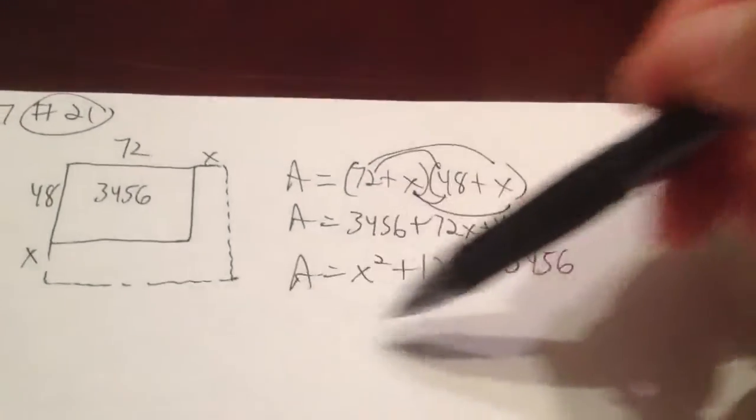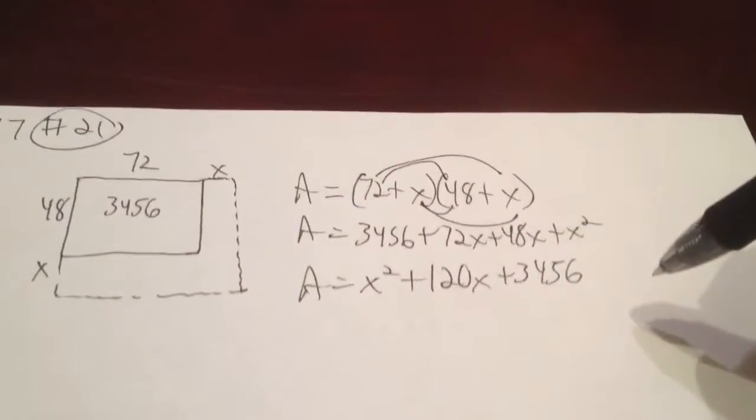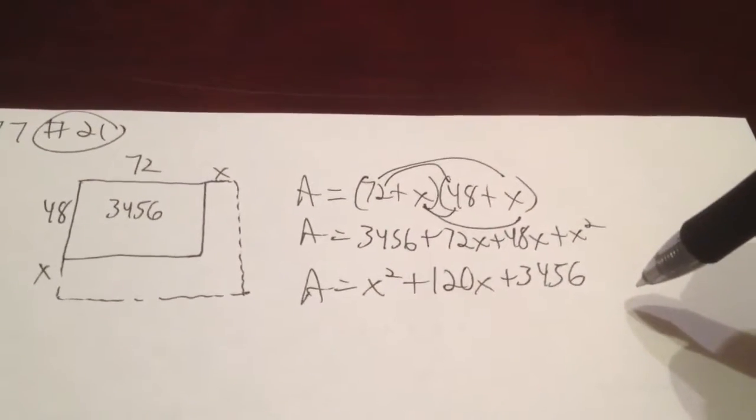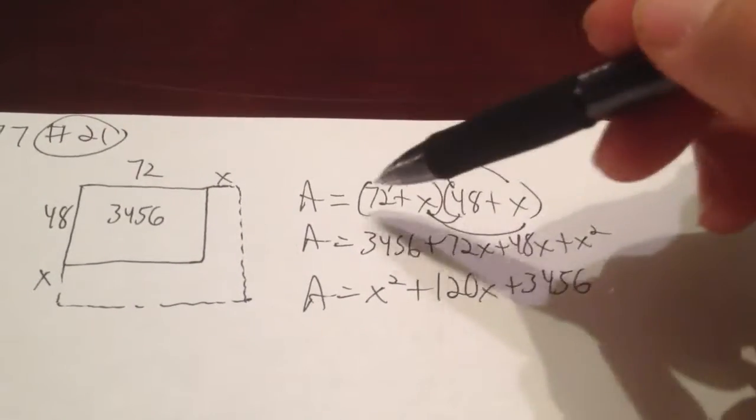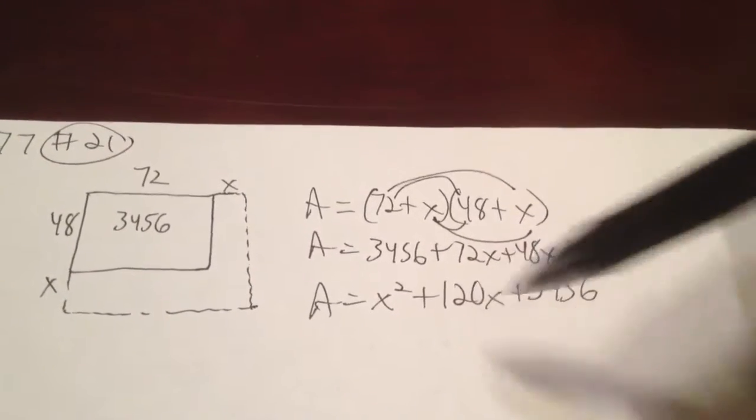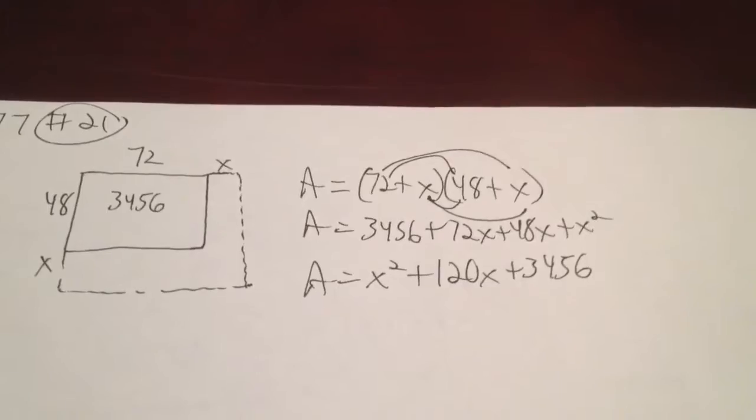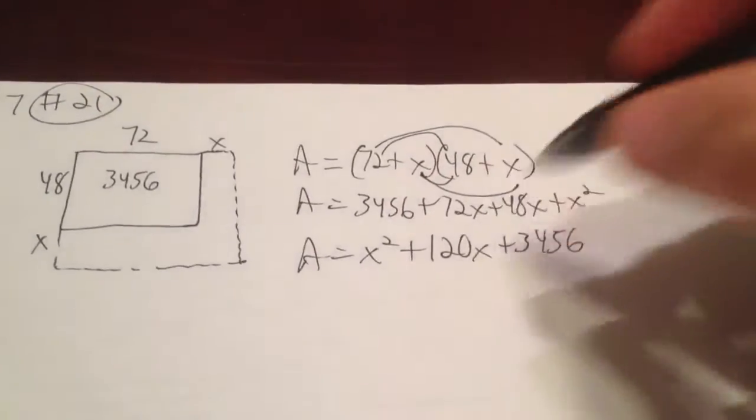Now, you could use this to figure out what the maximum area could be by taking the vertex, finding the two intercepts, finding the negative b over 2a, like we did in class. I'm not going to go through that now. That's not part of this problem.